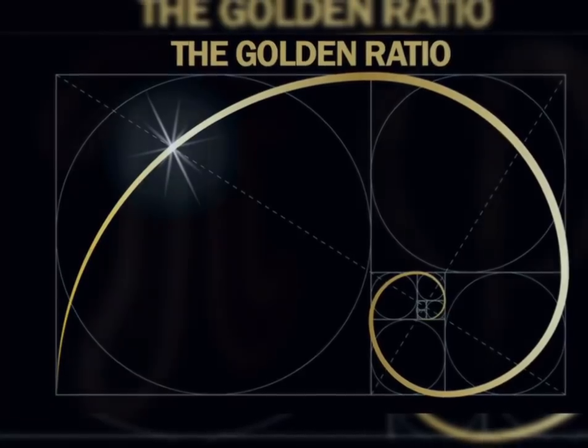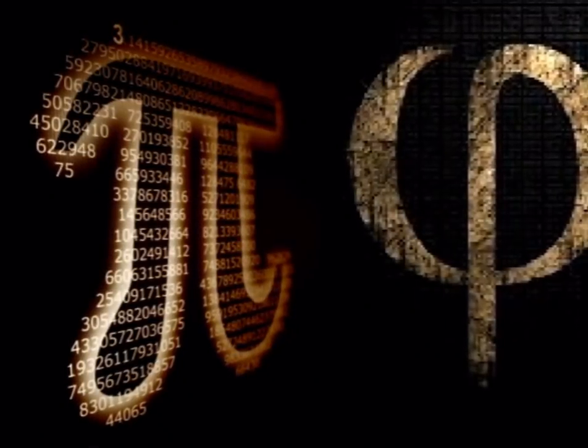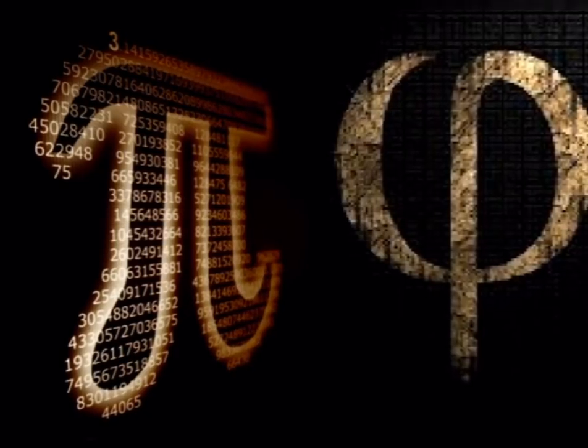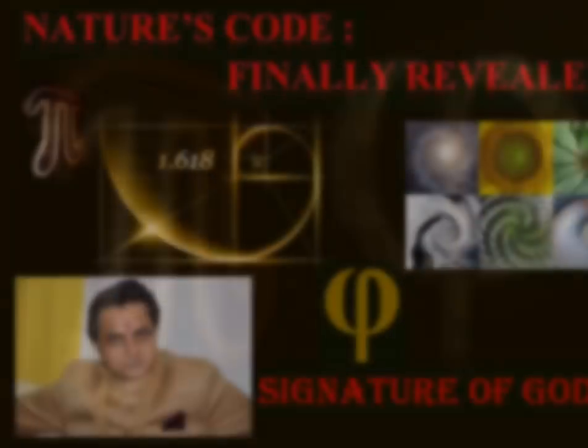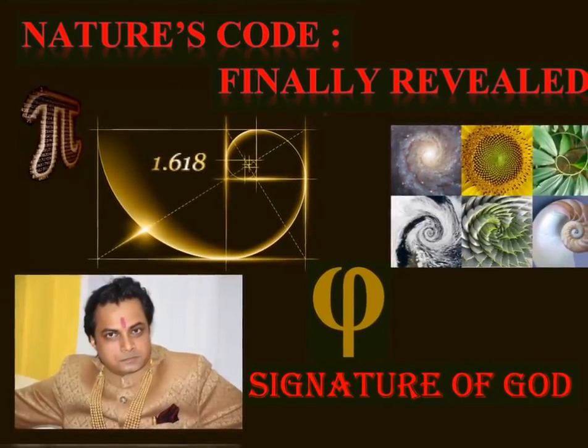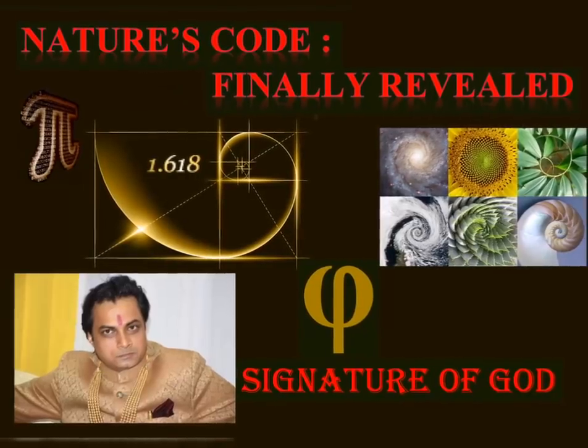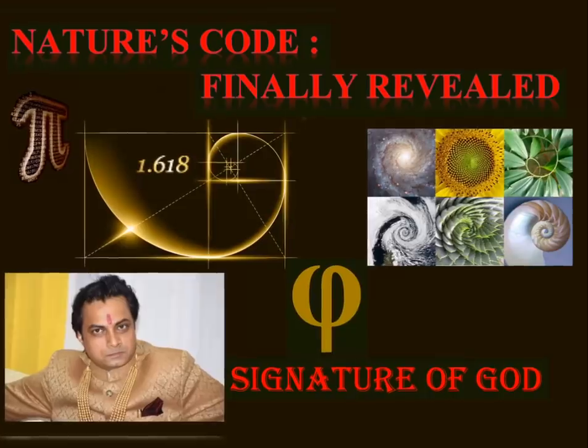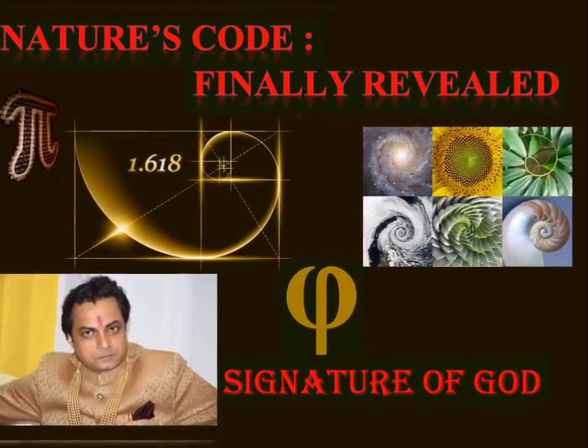It also unveils the exact correlation between nature's two most important constants, Pi and the Golden Ratio, Phi. To disappoint the skeptics of Golden Ratio, here, the Pi-Phi correlation is revealed with an unprecedented level of precision, and it is firmly premised upon classical geometric principles.